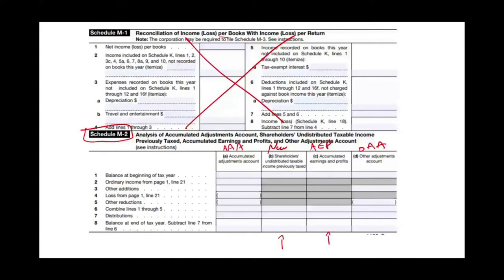Let's start with Accumulated Earnings and Profit, AEP. This account only exists if the corporation was a C-Corporation in the past and had earnings. When it operated as a C-Corporation, if it had undistributed earnings and then switched from C to S, you must keep track of those Accumulated Earnings and Profit because they have not been taxed yet. So when you take them out, those are taxed. That is what AEP is.